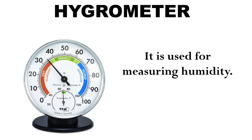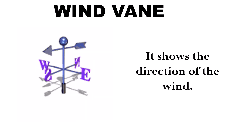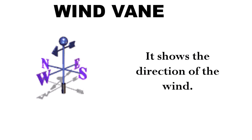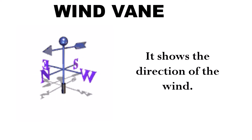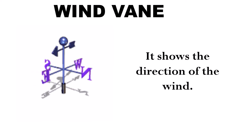Number four, hygrometer. It is used for measuring humidity. Number five, wind vane. It shows the direction of the wind. The arrow on the wind vane points towards the direction of the wind.